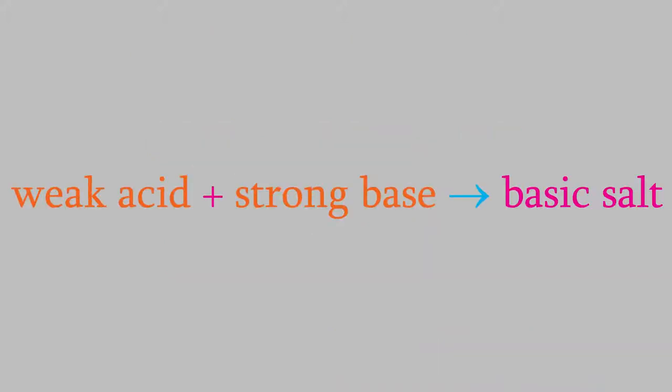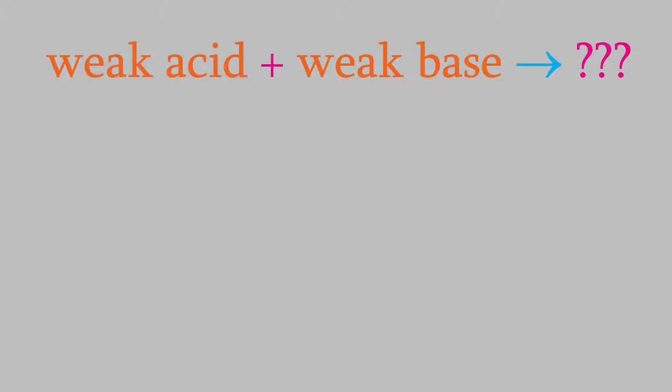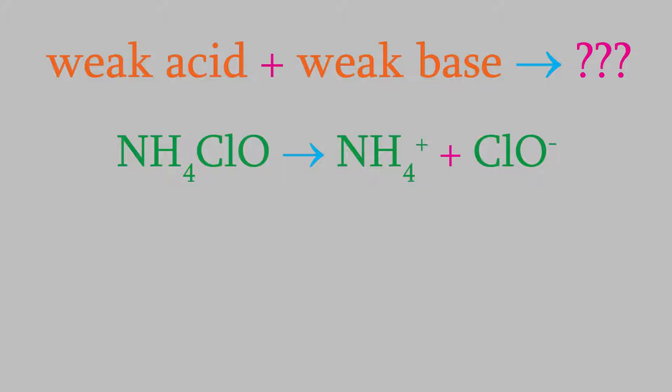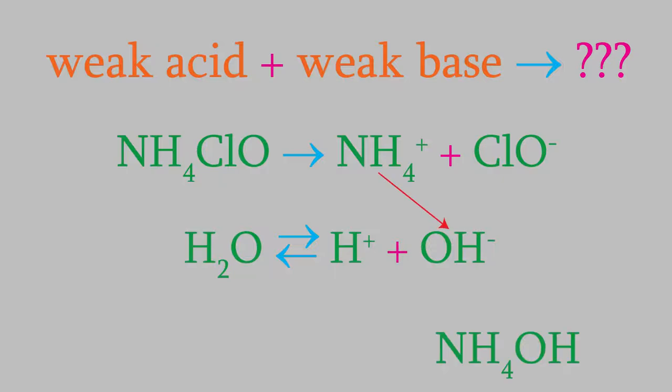A salt that gives us a weak acid and a strong base will be basic overall. But what about a salt that produces both a weak acid and a weak base? For example, suppose we dissolve ammonium hypochlorite in water. The salt dissolves to form ammonium ions and hypochlorite ions. When they combine with hydroxide and hydrogen ions, we get ammonium hydroxide and hypochlorous acid, which are a weak base and a weak acid. You might think that this means we'll get another neutral solution, but that isn't the case.